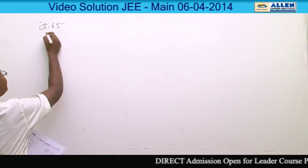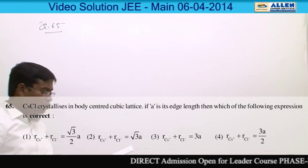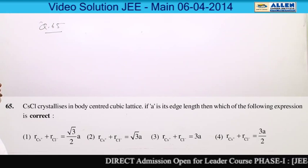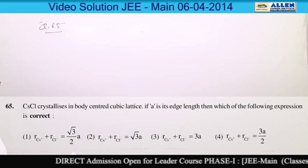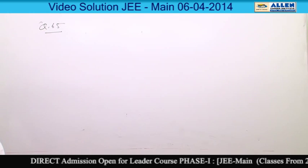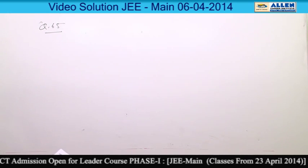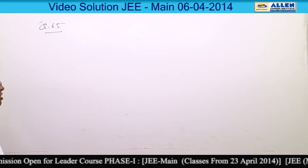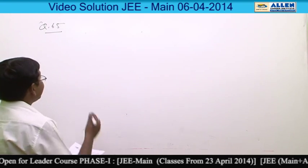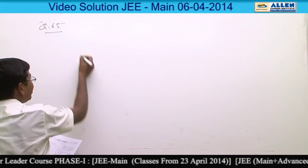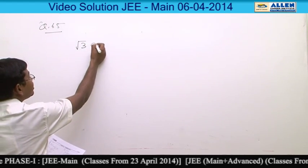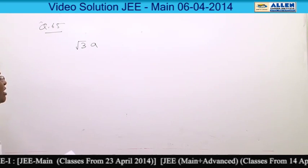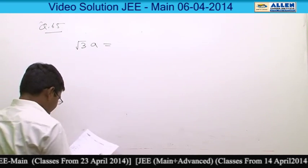Question number 65. In case of CsCl unit cell, Cs plus is present in the cubical void, that is at the body center of the cube, and Cl minus at each corner. If we take a body diagonal, the distance of the body diagonal is root 3a.